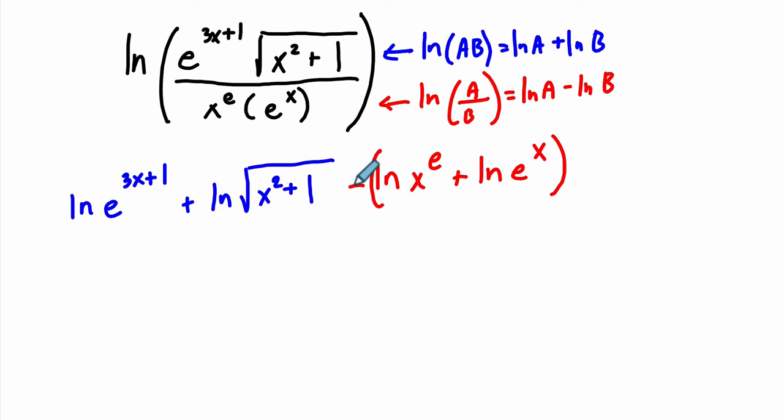But then, later on, when you distribute this negative sign to both parts, you'll get back to the same term. And if you don't like that, I'll rewrite it like this, so you can see all the steps. Why don't we just do that? Natural log of x to the e times e to the x. All right, so numerator subtracted by denominator.